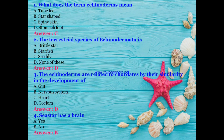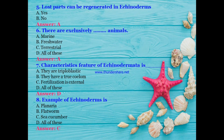Echinoderms are related to chordates by their similarity in the development of: gut, nervous system, heart, or coelom? The answer is D — coelom. Does a starfish have a brain? The answer is no — starfish have no brain. Can lost parts be regenerated in echinoderms? The answer is yes — lost parts can be regenerated.